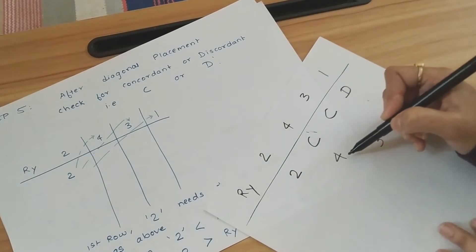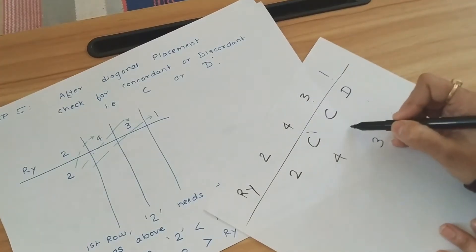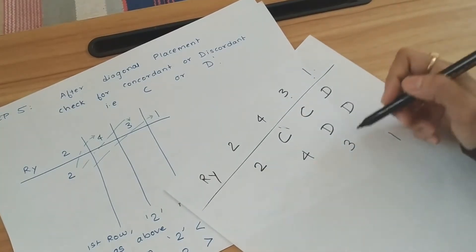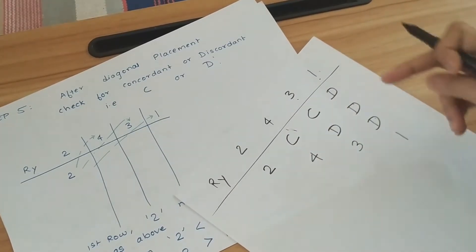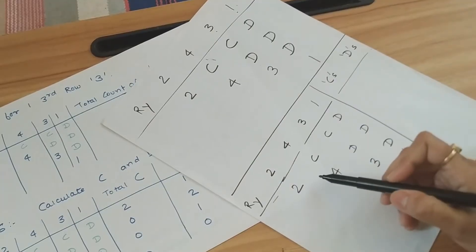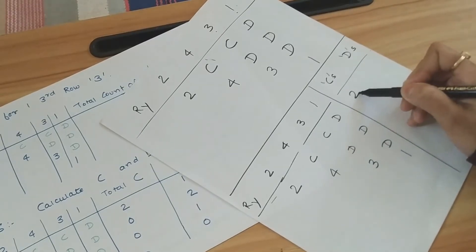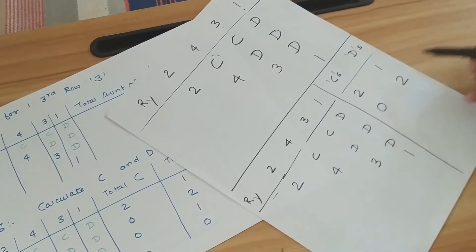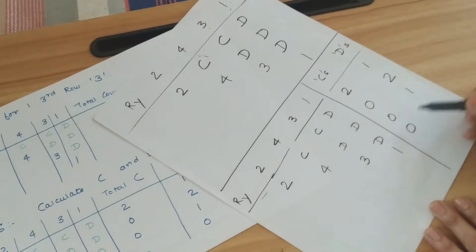For the row starting with 4: 4 is greater than 3 → D; 4 is greater than 1 → D. For the row starting with 3: 3 is greater than 1 → D. The last row always has zeros. So we have C and D counts per row.